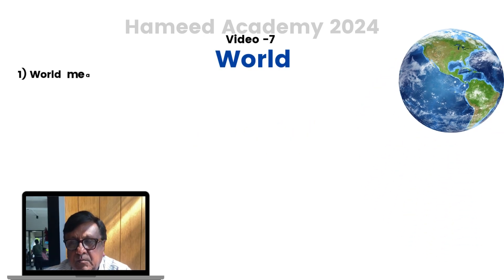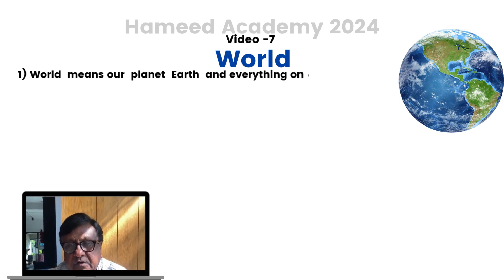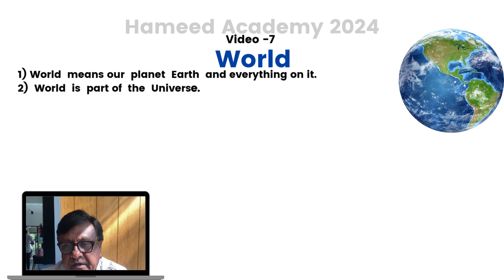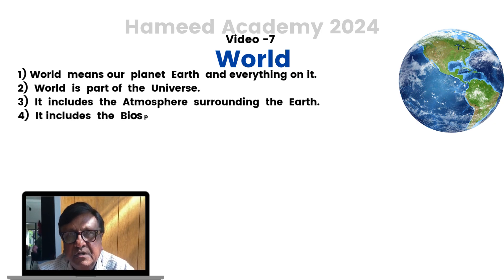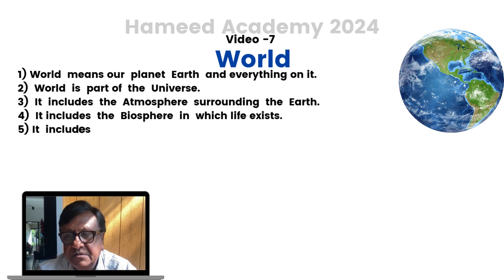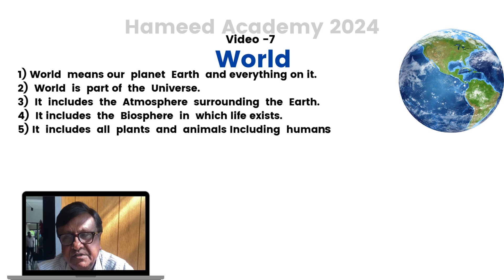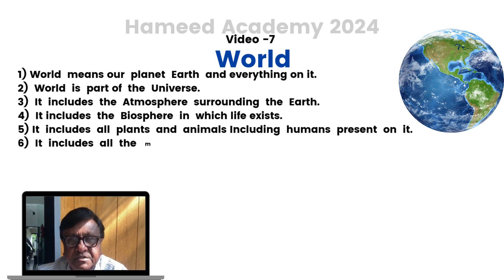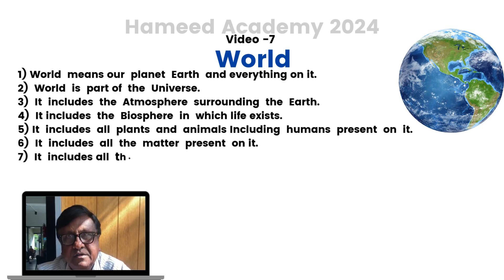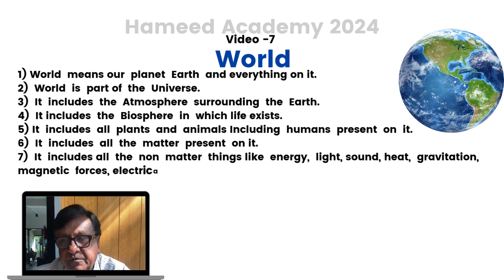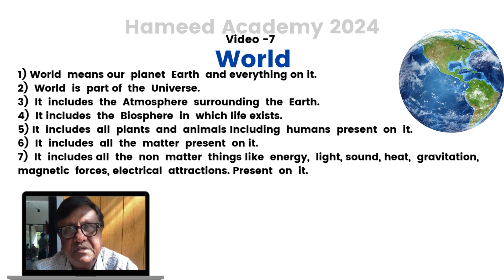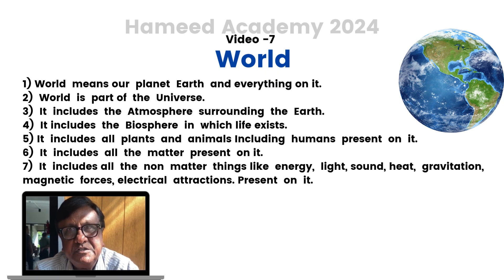Now we will try to know what the world means. World means our planet Earth and everything on it. World is part of the universe. It includes the atmosphere surrounding the Earth, the biosphere in which life exists, all plants and animals including humans, all the matter present on it, and all non-matter things like energy, light, sound, heat, gravitation, magnetic forces, and electrical attractions present on it.